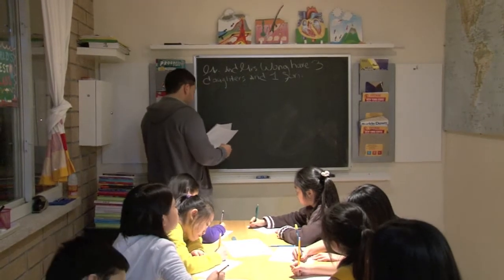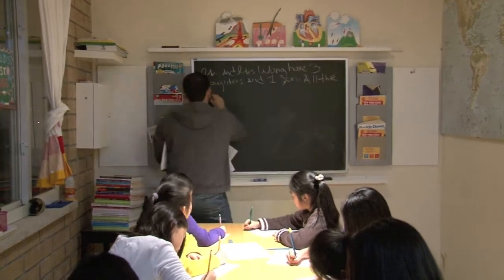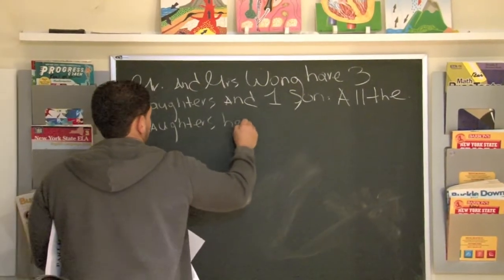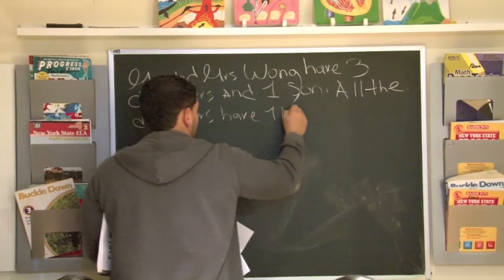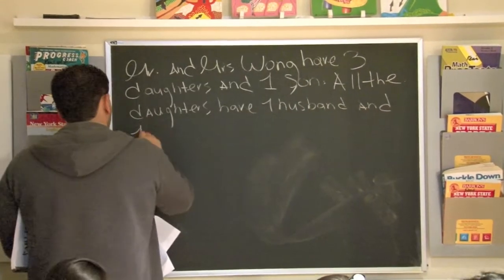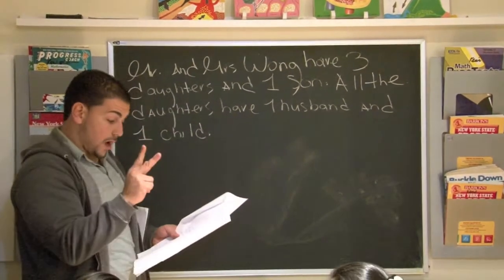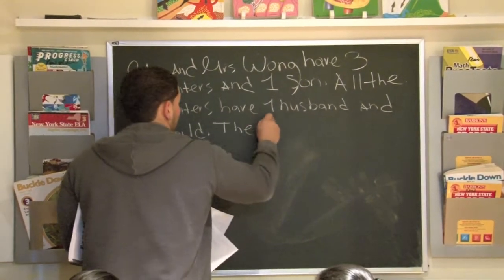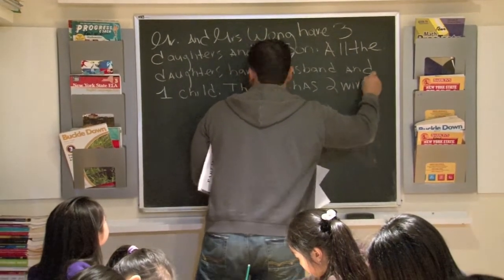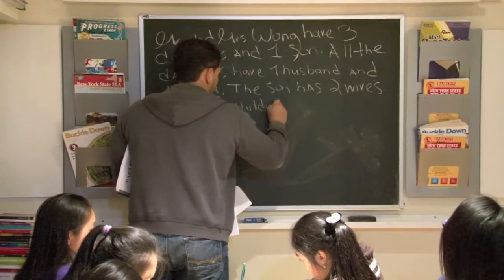Four children altogether. All daughters have one husband and one child. The son has two wives but no children.